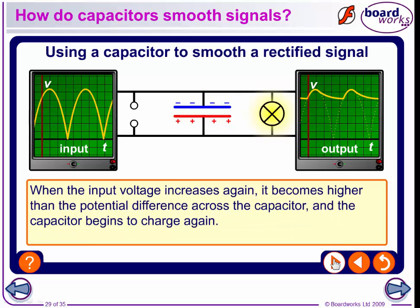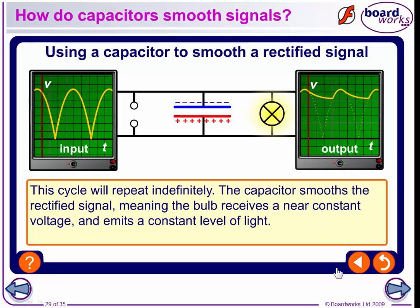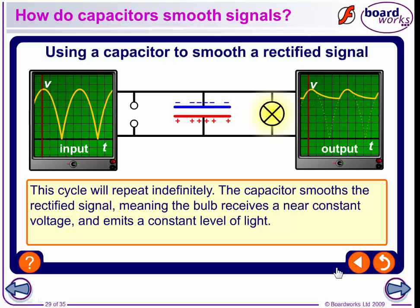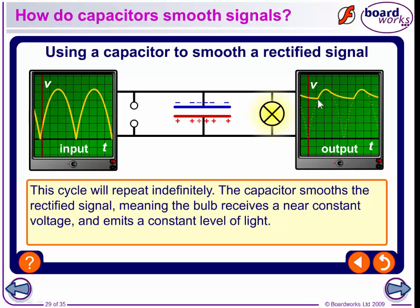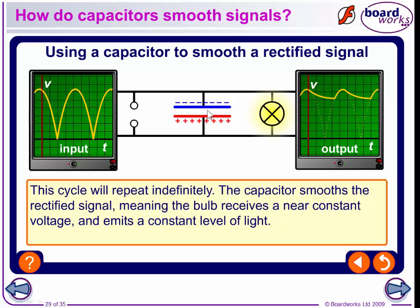When the input voltage increases again, it becomes higher than the potential difference across the capacitor, and the capacitor begins to charge again. So it basically keeps the voltage across the light bulb fairly constant. This cycle will repeat indefinitely. The capacitor smooths the rectified signal, meaning the bulb receives a near-constant voltage and emits a constant light level. You can see that it charges and then slowly discharges, but it keeps the voltage here fairly constant.